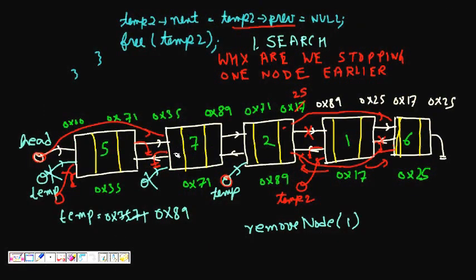We set head->prev = null so the second element's previous pointer, which was pointing to the old head, now becomes null. Then we call free(temp) to free the old head node. This was about deleting a node from a doubly linked list.